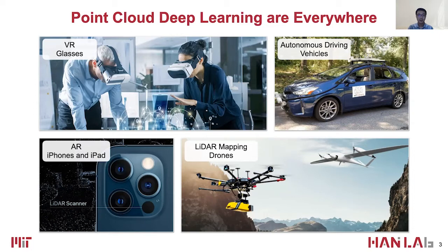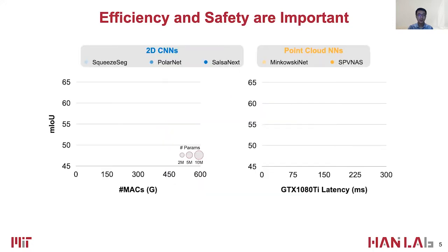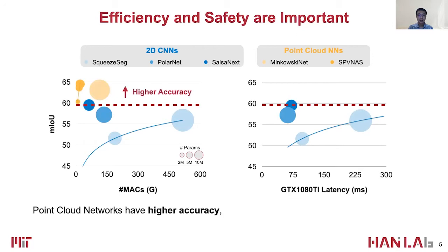These applications require real-time interactions with humans, and thus it is crucial to emphasize not only high accuracy but also low latency and low energy consumption. Compared to projecting 3D point clouds into 2D and then applying convolutional neural networks, directly processing 3D point clouds with point cloud networks yields up to 5% higher accuracy with 7 times fewer multiply-adds.